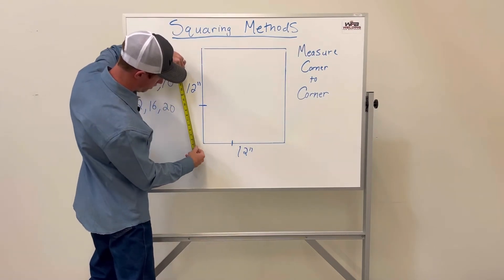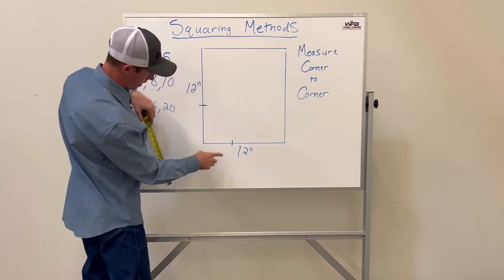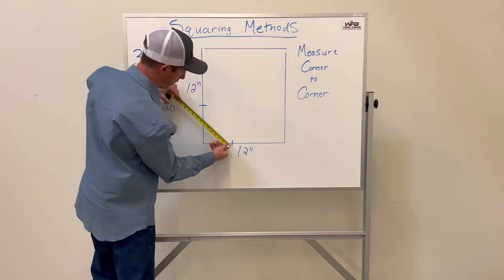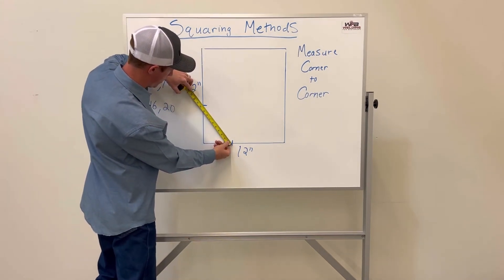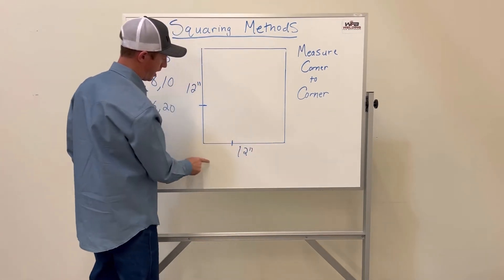From this point to this point, it needs to equal ten. Holding on that point there, it is ten inches. So this is a perfect 90-degree corner.